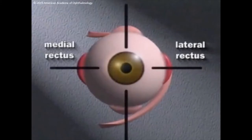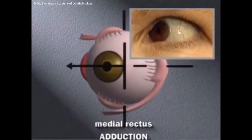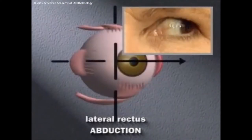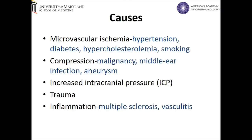The medial and lateral rectus muscles allow for ocular motility in the horizontal plane of motion. Specifically, the medial rectus allows for adduction of the eye, whereas the lateral rectus muscle allows for abduction of the eye. Almost all cranial nerve 6 palsies are acquired later in life and are caused by conditions that have damaged the 6th cranial nerve, which supplies the lateral rectus muscle.